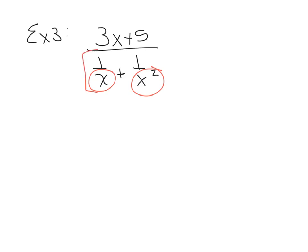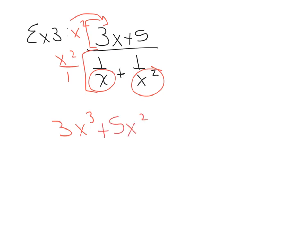We'll multiply the bottom by X squared over 1, but remember, whatever you do to the bottom you must do to the top. Even though there are no fractions to clear on top, we still multiply by X squared. This time on the top I won't use X squared over 1 since there are no fractions — we just distribute, giving 3X cubed plus 5X squared in the numerator.